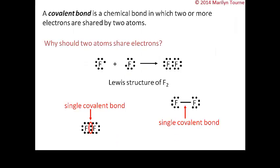In the last video, we learned that ionic bonds were bonds where one species transfers electrons to another species in order to achieve the stability of a noble gas.